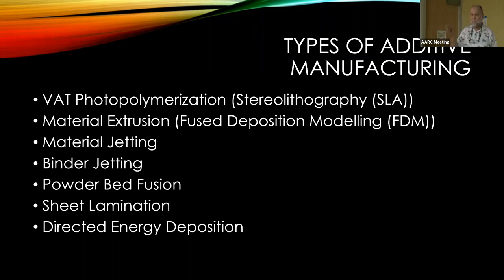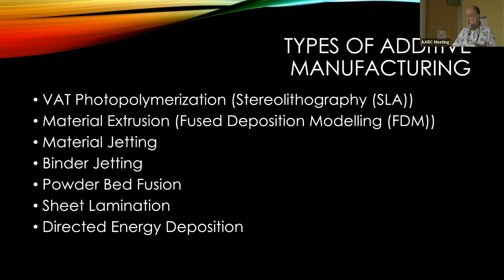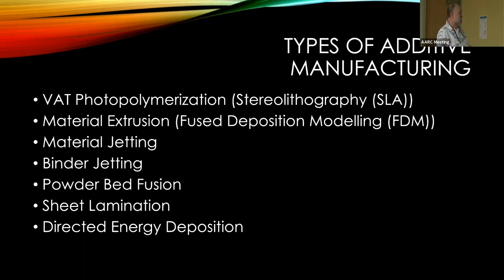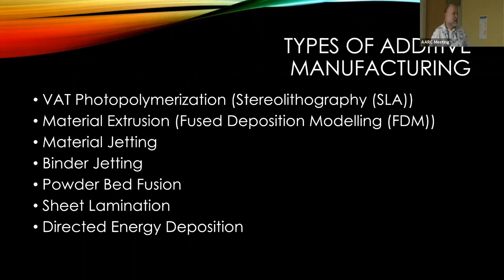Sheet lamination is something a lot of people have done manually — you take many layers of material, cut shapes in each layer, laminate them with adhesive, and end up with a solid. Directed energy deposition is a lot like powder bed fusion — I don't understand it very well, honestly.